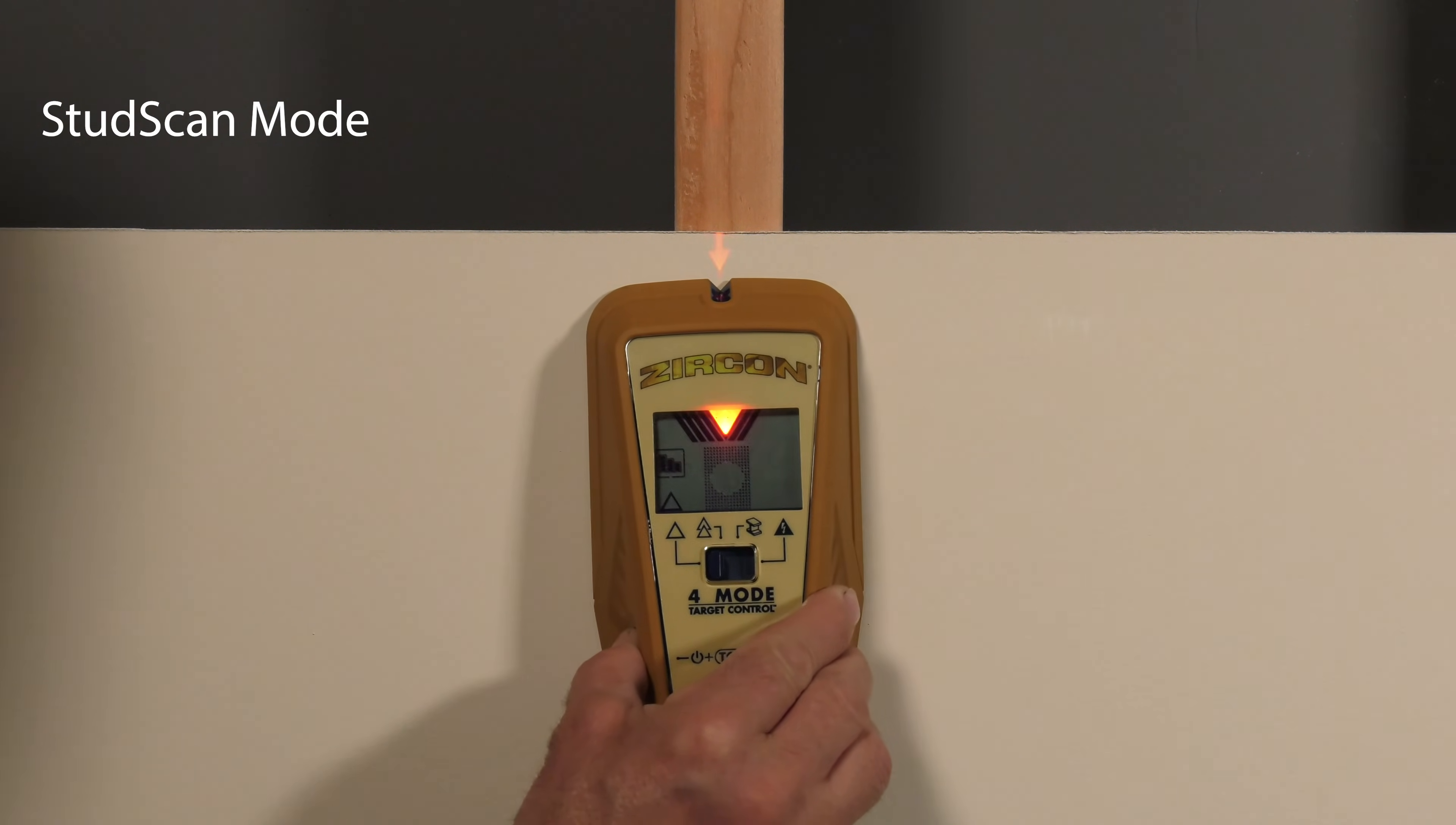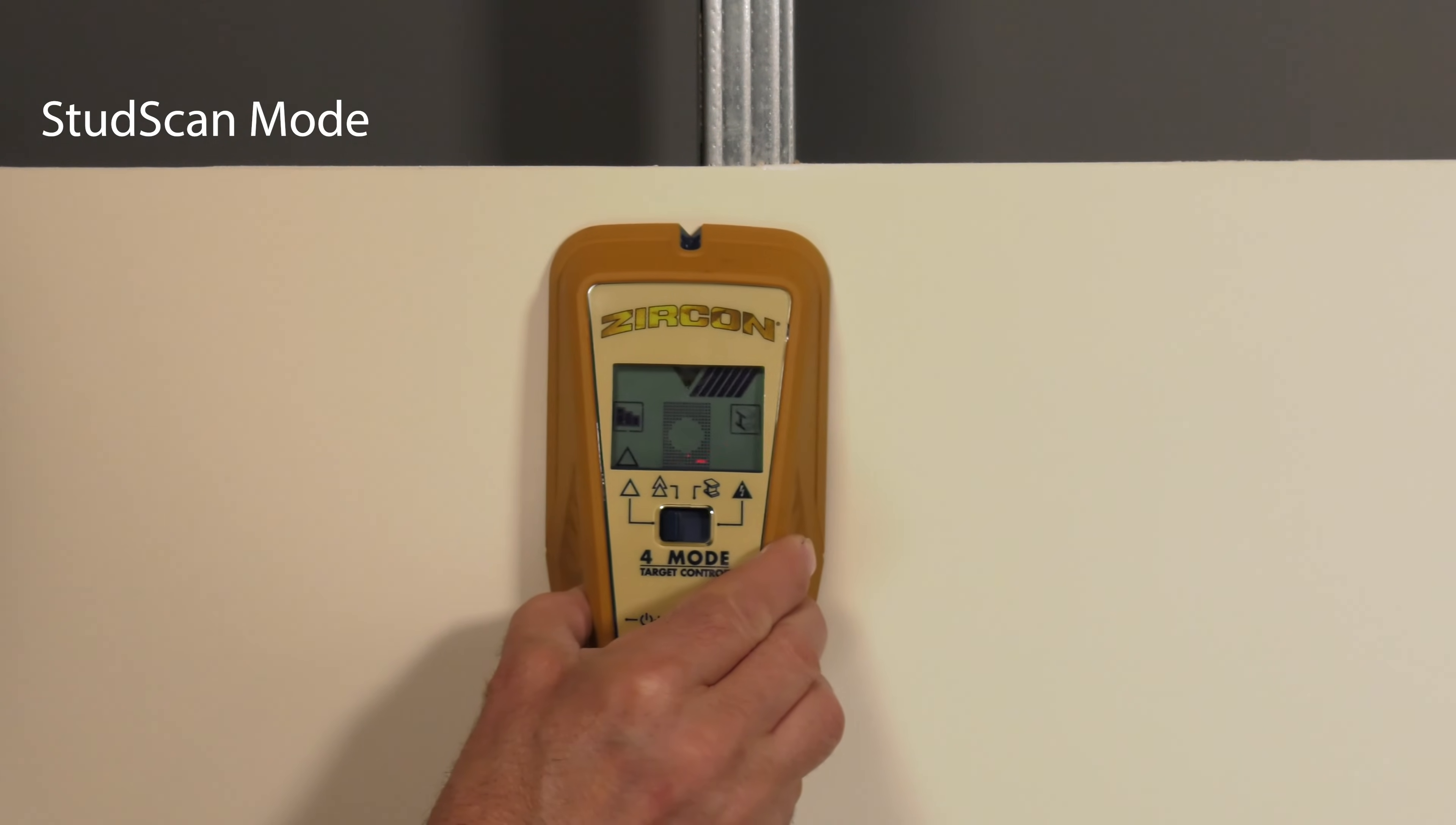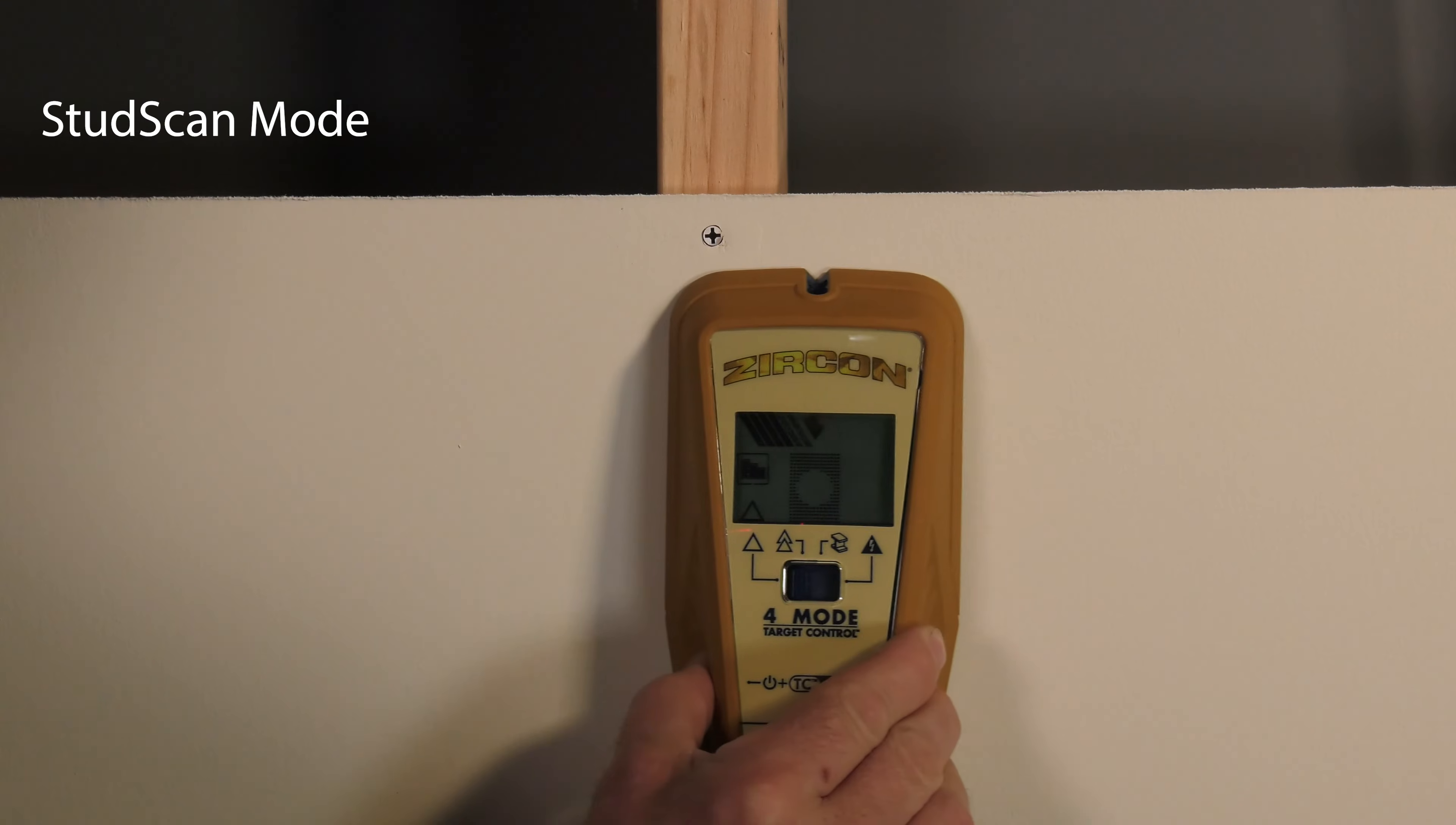And scan the area again. In stud scan mode, the stud indications will also indicate metal studs or when over metallic objects.